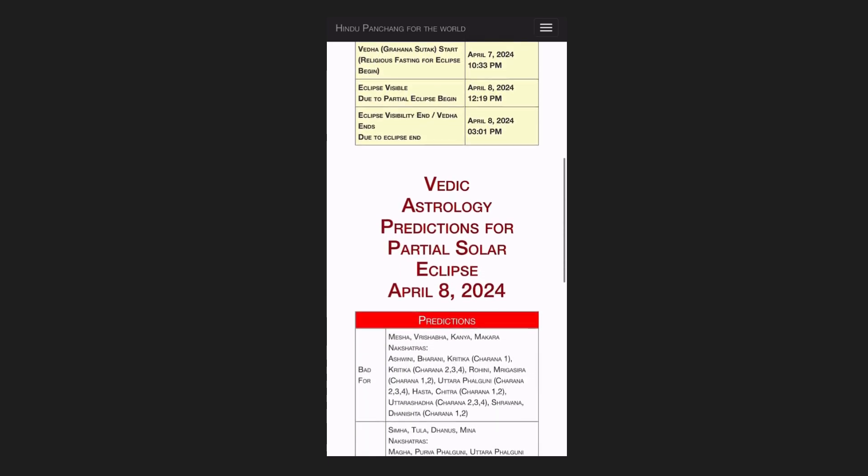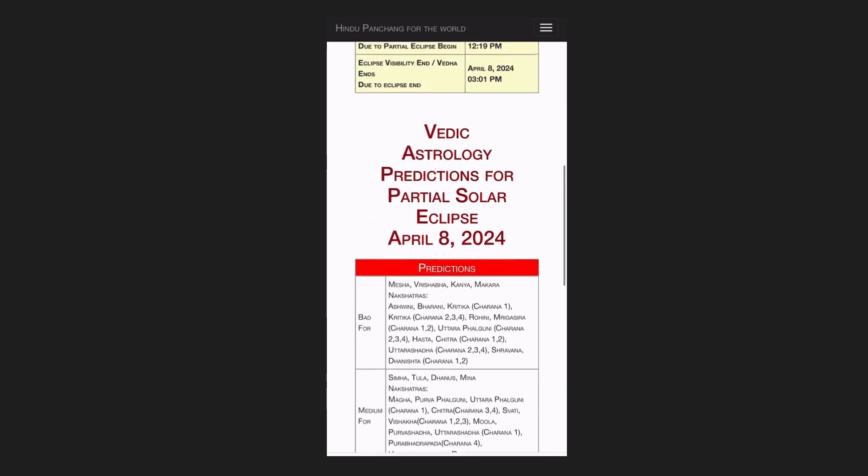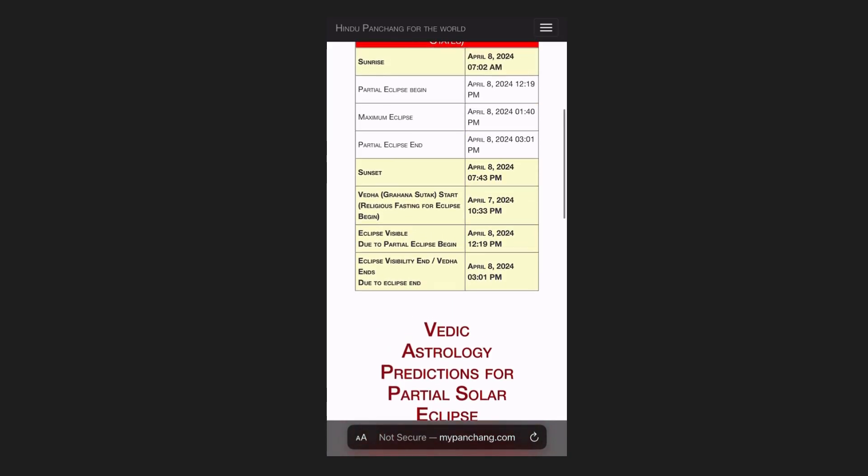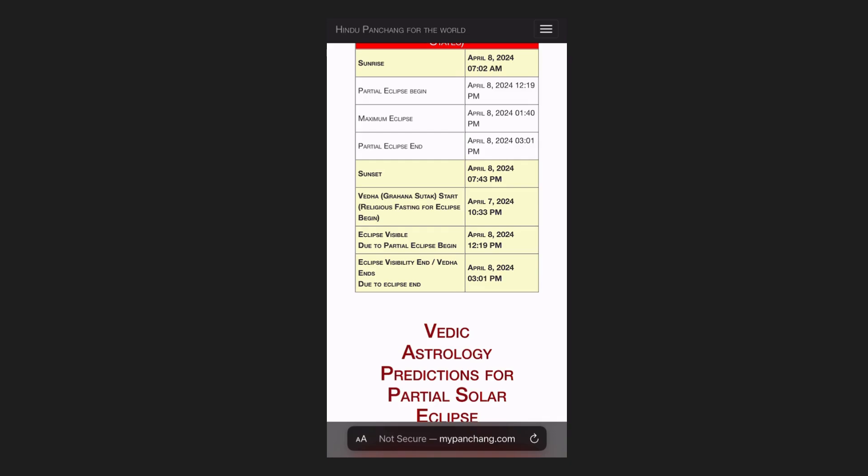So you will see the sunrise in Houston and then also the eclipse timing, sutaka. Also you will see the eclipse prediction. Here you will notice that eclipse start time is on April 8 at 7:02 AM. Partial eclipse begins at 12:19 PM, maximum eclipse at 1:40 PM, partial eclipse ends at 3:01 PM, and sunset is at 7:43 PM. Veda begins the day before, which is April 7 at 10:33 PM. Eclipse visibility begins at 12:19 PM and ends at 3:01 PM.